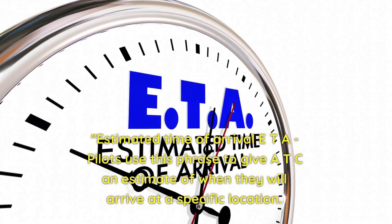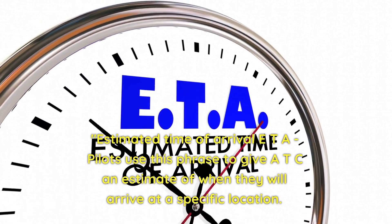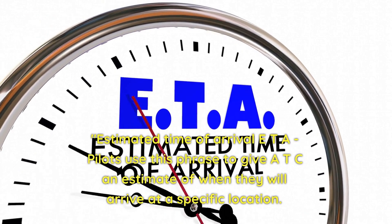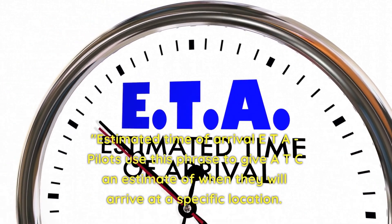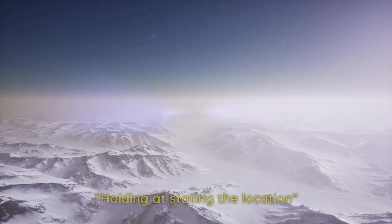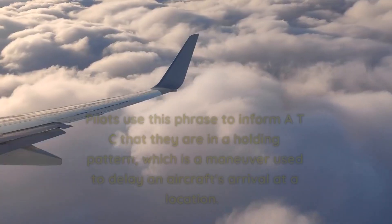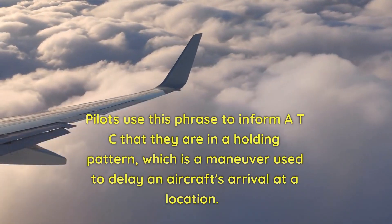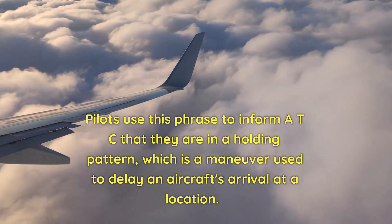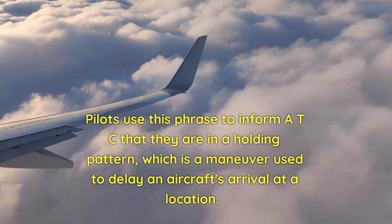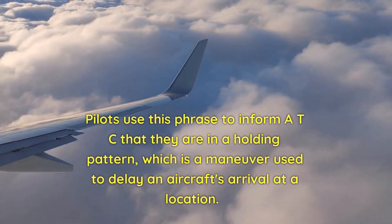Estimated time of arrival (ETA) — pilots use this phrase to give ATC an estimate of when they will arrive at a specific location. Holding, stating the location — pilots use this phrase to inform ATC that they are in a holding pattern, which is a maneuver used to delay an aircraft's arrival at a location.